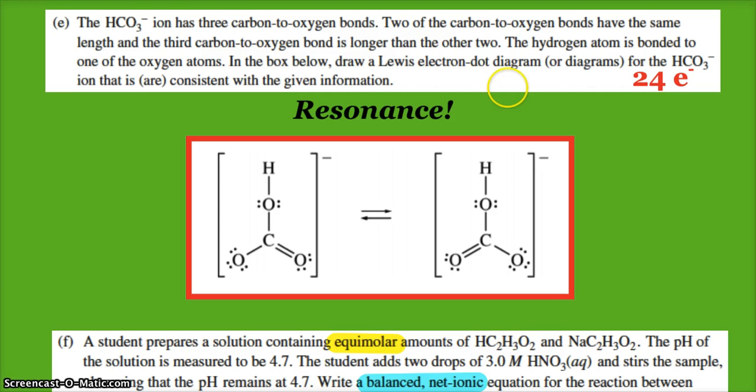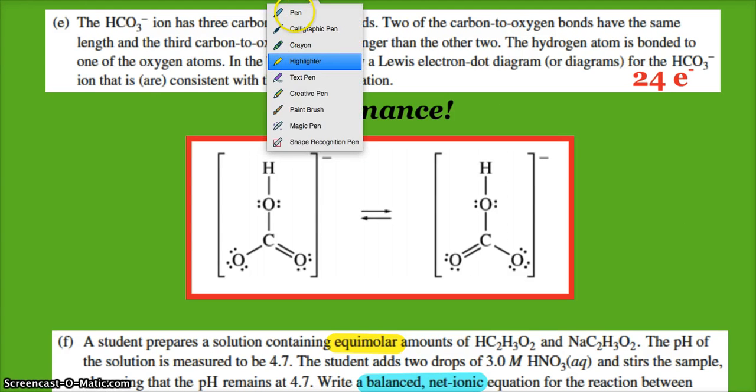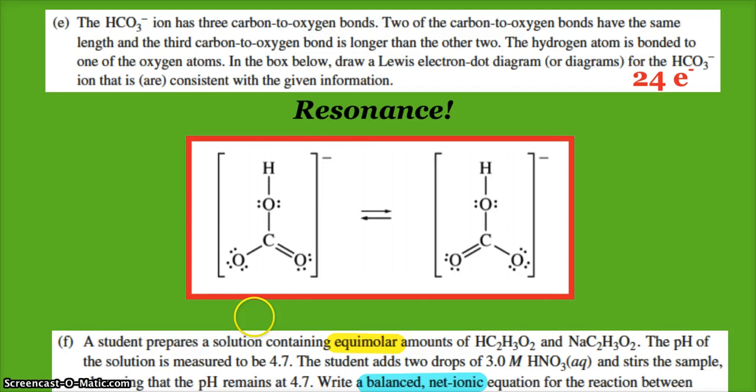Now if you remember, you could have drawn perhaps just one diagram and had the resonance like this. And then you wouldn't need this second drawing—you could have just shown the resonance structure right there. That would have been acceptable. That's why it says draw the diagram or diagrams, but you need to show the resonance: these two carbon-oxygen bonds are the same, this one's longer.